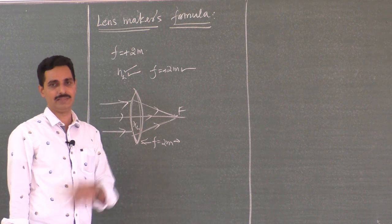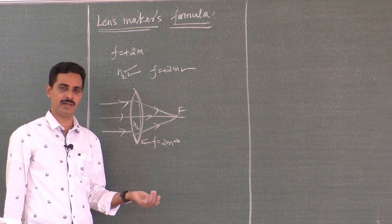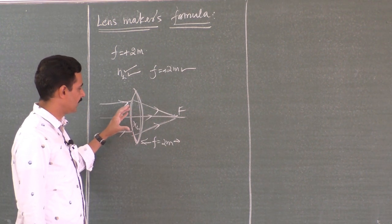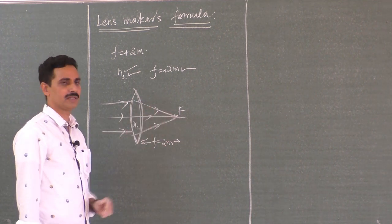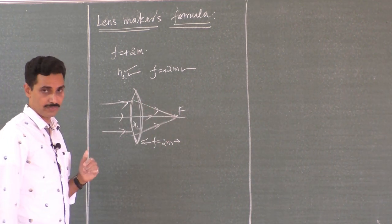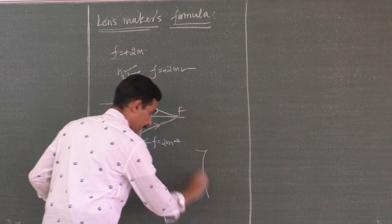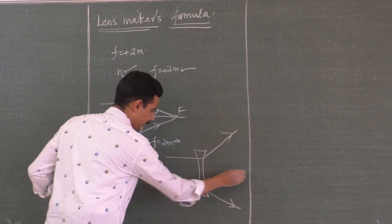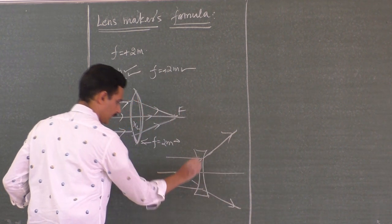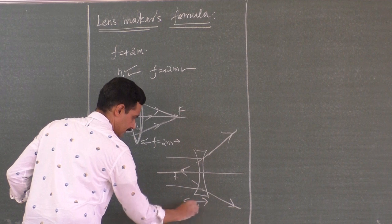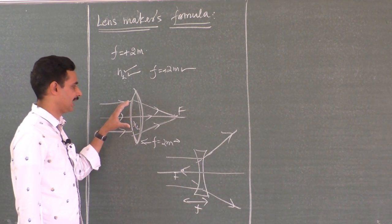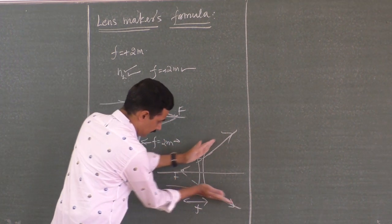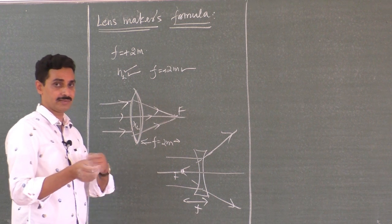Every lens has a focal length. What do you mean by focal length? When parallel rays are incident on a lens, after refraction through both the surfaces, they meet at a point. If it is a convex lens, they really converge at a point. If it is a concave lens, they appear to meet at a point — they diverge in such a way that they appear to diverge from a fixed point. This is the focus and this is the focal length. So if parallel rays are incident on a lens, after refraction either they converge at a point, or they appear to diverge from a point.